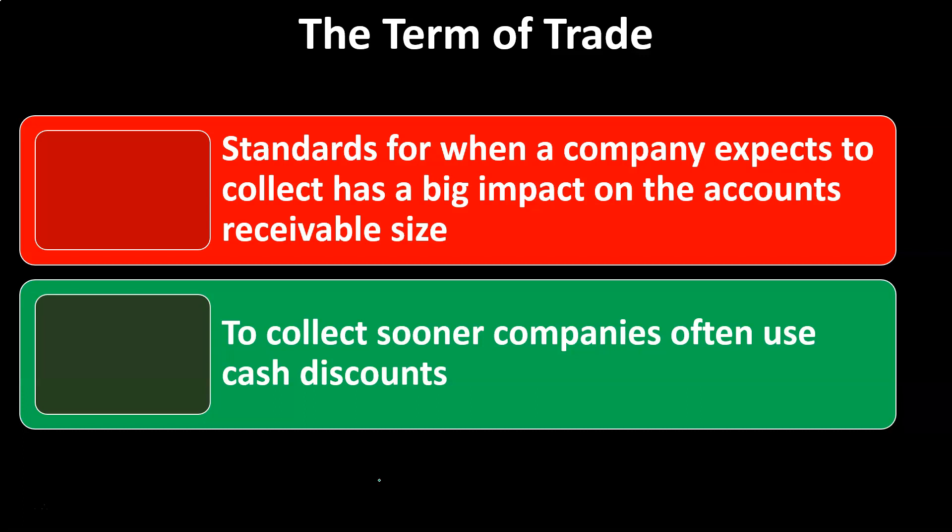The terms of trade — the standards for when a company expects to collect — have a big impact on accounts receivable size. We have to think about AR with the same cost-benefit analysis as any other asset. If we set policies that result in a larger accounts receivable, are the benefits worth the costs? When we increase AR, we're not getting paid as soon, and we're likely dealing with riskier individuals. The longer a receivable is outstanding, the less likely we are to collect on it — though that has to be weighed against the benefit of higher sales from a wider customer base.